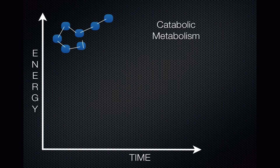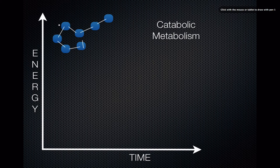Catabolic metabolism has a graph you can think of this way. You start with a molecule that's made up of lots of parts — here we have a molecule made up of seven different things, held together by bonds represented by little white lines. This molecule is large and contains a lot of energy because it's up high on the graph. We're going to take this reactant through a catabolic reaction, so that means we're going to break it up into pieces.